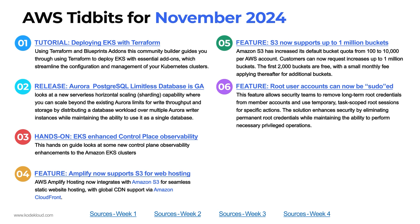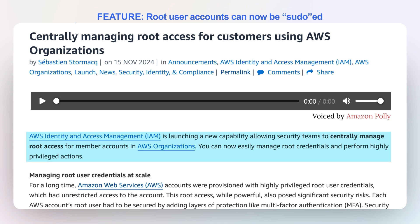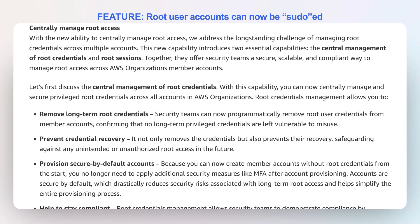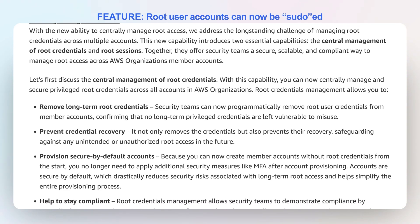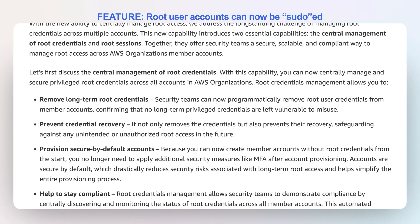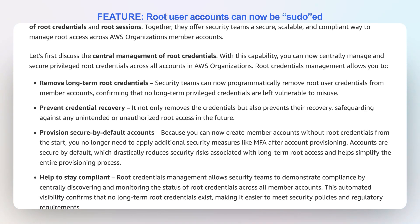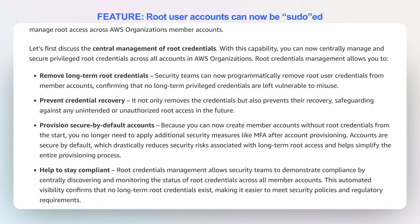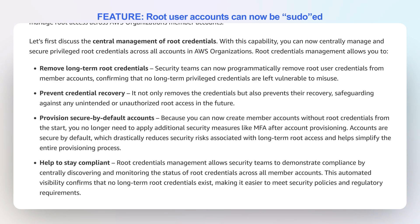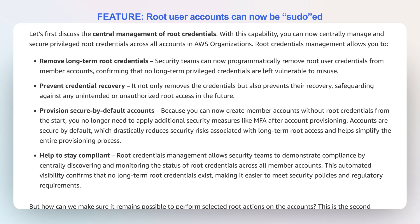Number six: root user accounts can now be sudo-ed. If you know in Linux, you elevate credentials by never really logging in as root — well, IAM, the Identity Access Management service inside AWS, now allows security teams to remove long-term root credentials from member accounts. You can basically elevate your sessions to be the root user for specific actions. This allows you to assume an elevated security persona with root user permissions without needing permanent root credentials. This primarily works in the context of organizations, and the ability to assume root permissions in a temporary fashion is absolutely amazing.